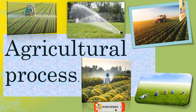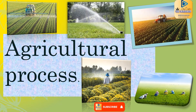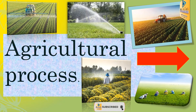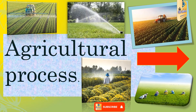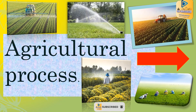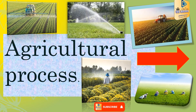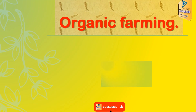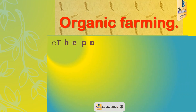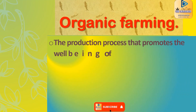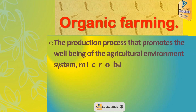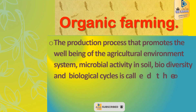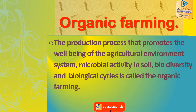We should identify the two fields that must be managed according to the Green Concept: agricultural process and industrial process. First, about the agricultural process — organic farming. The production process that promotes the well-being of the agricultural environment system, microbial activity in soil, biodiversity, and biological cycles is called organic farming.